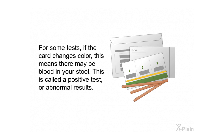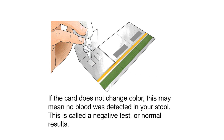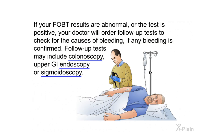Results. For some tests, if the card changes color, this means there may be blood in your stool — this is called a positive test or abnormal results. If the card does not change color, no blood was detected — this is called a negative test or normal results. If your FOBT results are abnormal or the test is positive, your doctor will order follow-up tests to check for the causes of bleeding. Follow-up tests may include colonoscopy, upper GI endoscopy, or sigmoidoscopy.